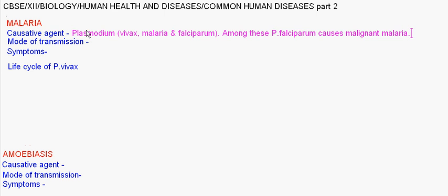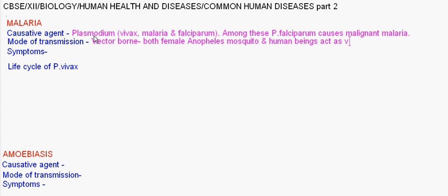Coming to mode of transmission: malaria is a vector-borne disease. Both the female Anopheles mosquito and human beings act as vectors. The word 'vector' means carrier — carrier of the disease-causing agent, that is Plasmodium. So both Anopheles mosquito and human beings carry these three species of Plasmodium.